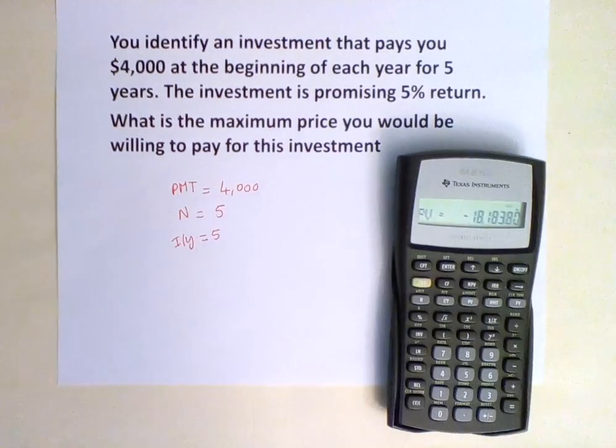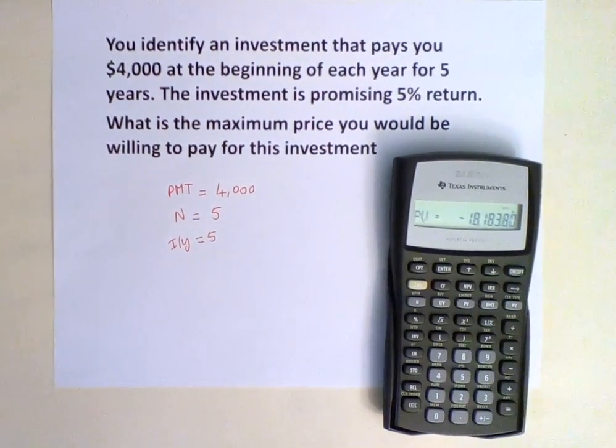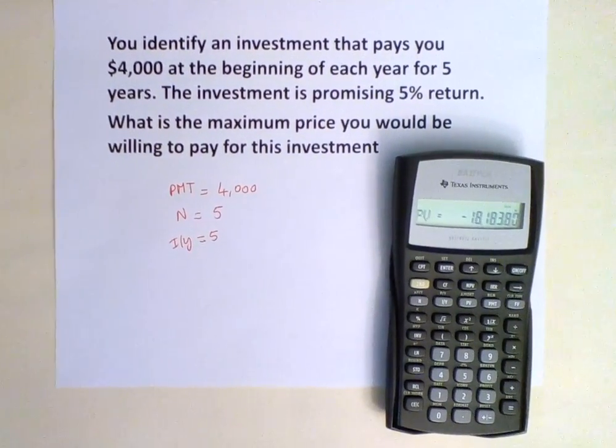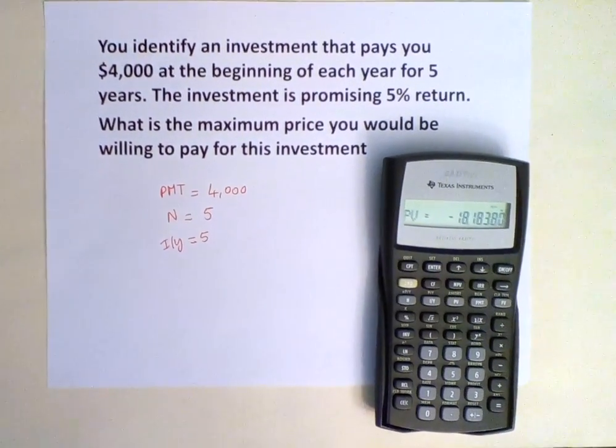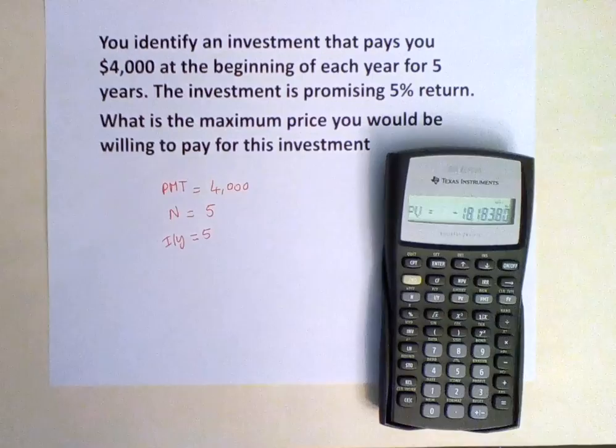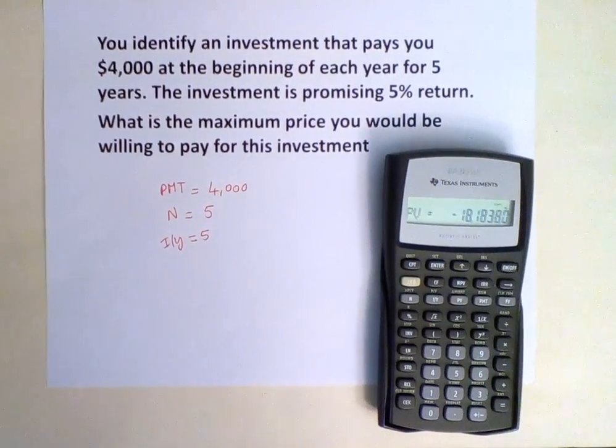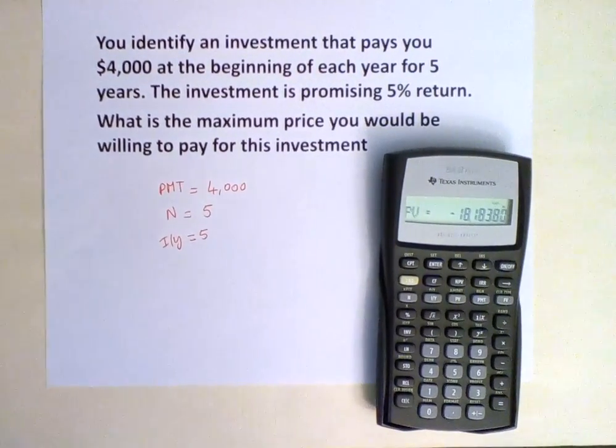So we hit compute, present value. That means we would be willing to pay $18,183.80 for this annuity.